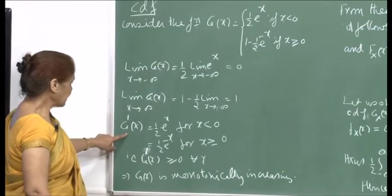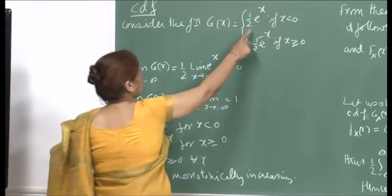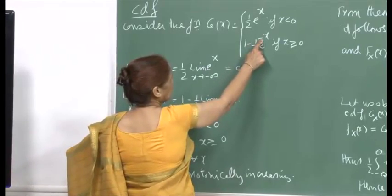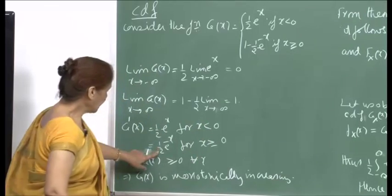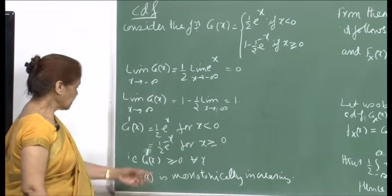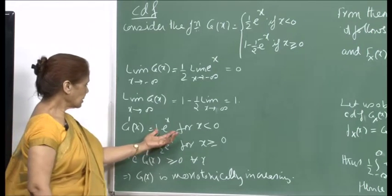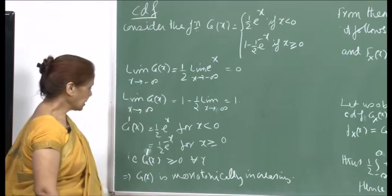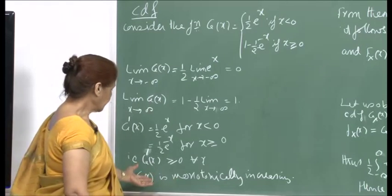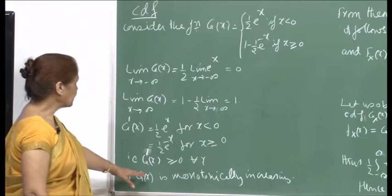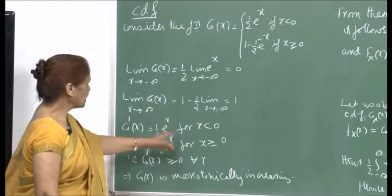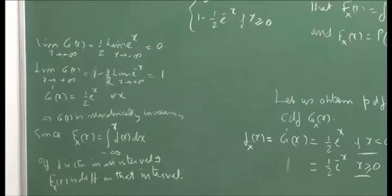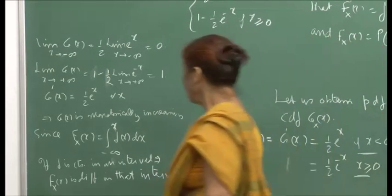For x ≥ 0, g′(x) = (1/2)e^(−x), which is also non-negative. So g′(x) is non-negative for all x, implying g(x) is monotonically increasing — a required property of a CDF. Therefore g(x) satisfies all conditions to be a cumulative distribution function. We are verifying that this qualifies as a CDF, and checking the remaining properties confirms this.